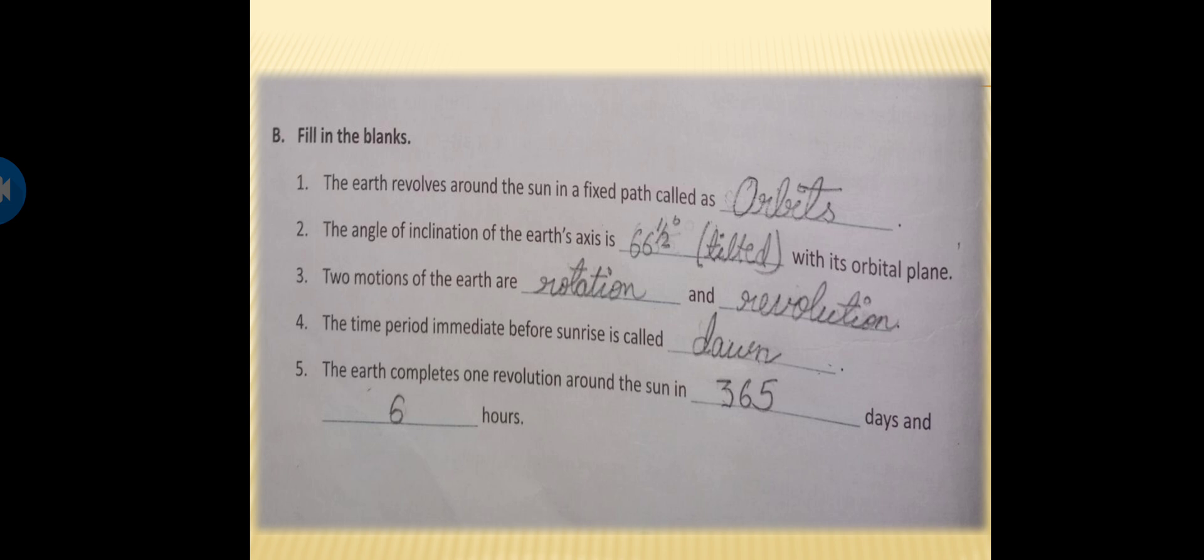Now come to question number 3. Two motions of the earth are, first one, rotation, that cause day and night. And second one, revolution, that cause changes of seasons. Now come to question number 4. The time period immediate before sunrise is called dawn.